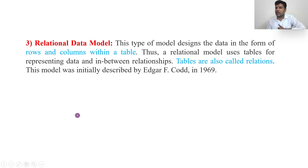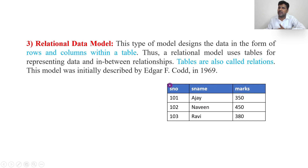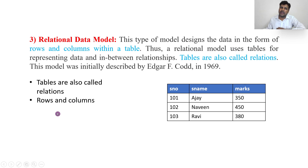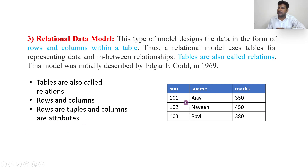Next is the relational data model. The relational data model contains rows and columns. The tables are also called relations, and in this model, data is represented in the form of tables. You can see a table here — rows are called tuples or records, and columns are called attributes.